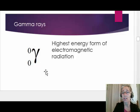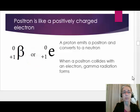A positron is like a positively charged electron. It has the same mass as an electron. Positrons are emitted from protons which then convert to neutrons.